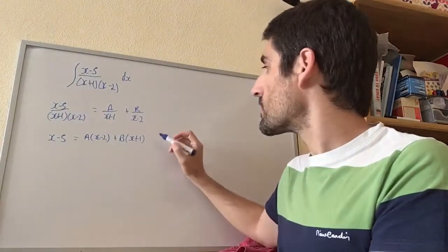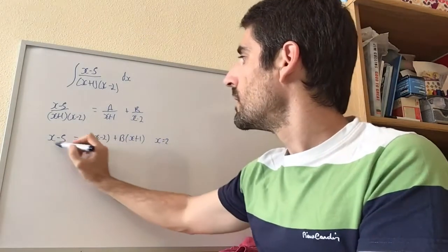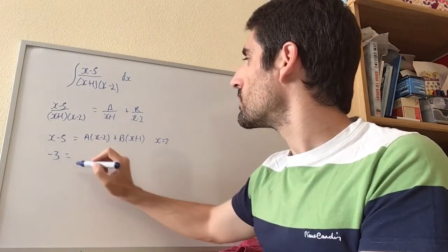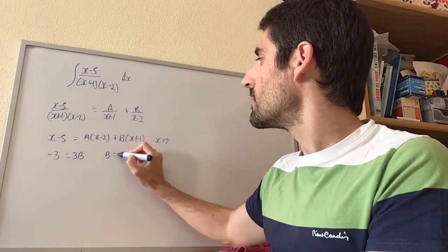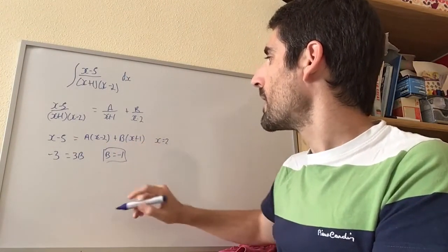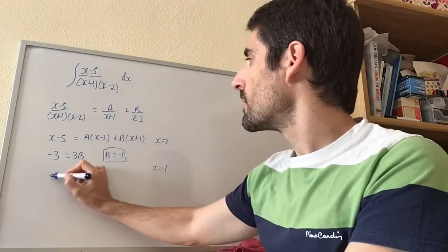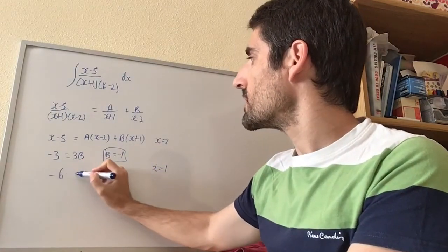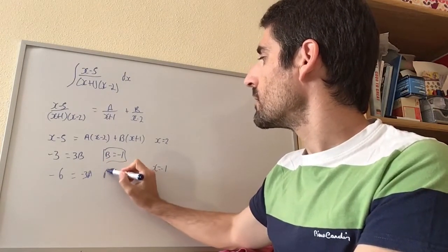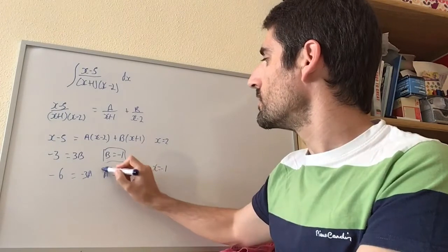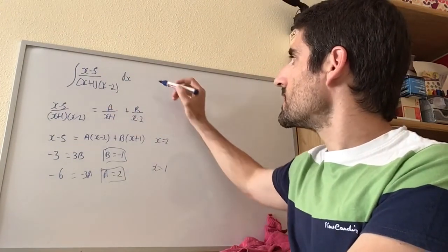We choose x equals 2: that gives minus 3 equals 3B, which means B equals minus 1. And when x equals minus 1: minus 6 equals minus 3A, which means A equals 2.